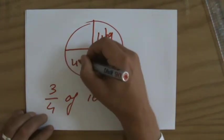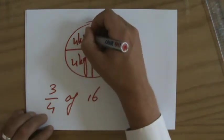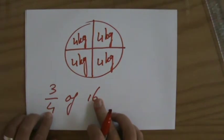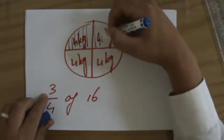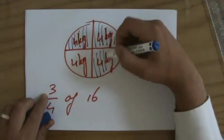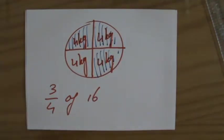Because you would do 16 divided by 4. And how many of those parts do I have? I have 3 of them. So 4 times 3. 12 kilos.